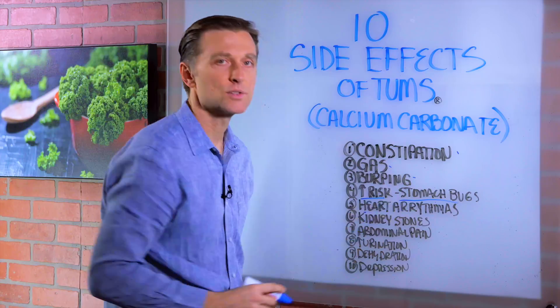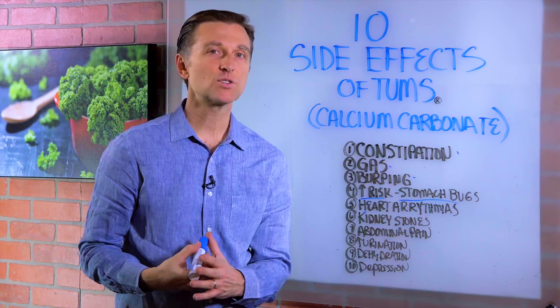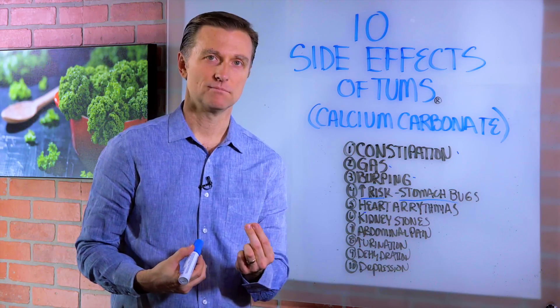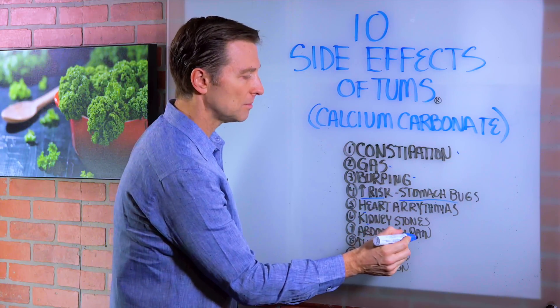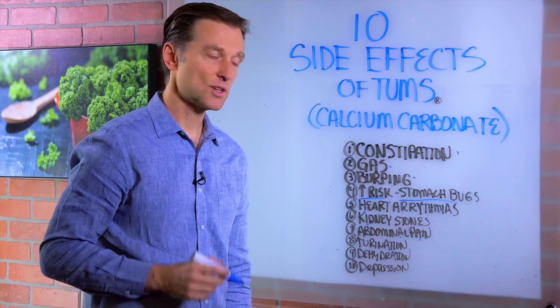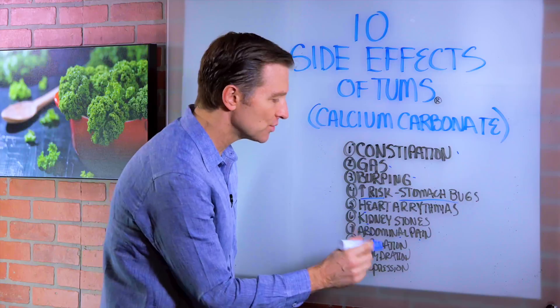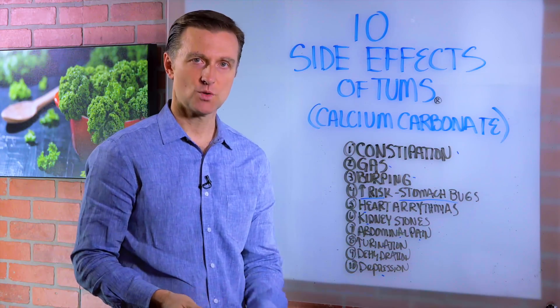Number five, heart arrhythmias. Why? Because you're not able to absorb the minerals. Guess what electrolyte is? It's a mineral. And then we have kidney stones, abdominal pain, increased urination, especially at night, dehydration, depression, and even anxiety, mood disorders.